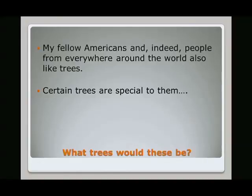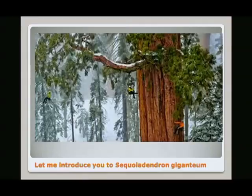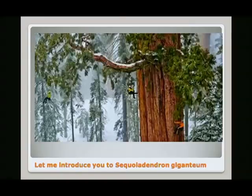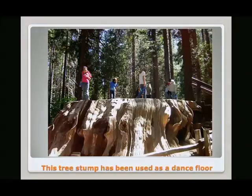It's not just the people in Auburn, Alabama who like trees — people from everywhere around the world like trees, and certain trees have a special appeal. With all due respect to eucalyptus regnans, the giant sequoias and giant redwoods in California — where else can you repel off of trees? These trees are just simply overwhelming. Photographs like this do not do justice to them.